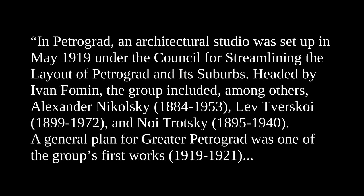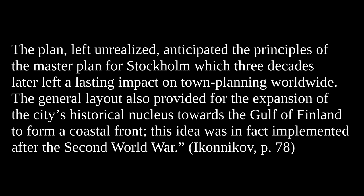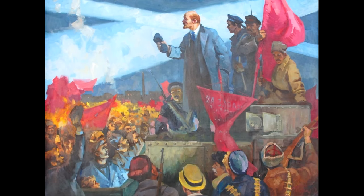In Petrograd, an architectural studio was set up in May 1919 under the council for streamlining the layout of Petrograd and its suburbs. Headed by Ivan Fomin, the group included Alexander Nikolsky, Lev Tverskoy and Noe Trotsky. A general plan for Greater Petrograd was one of the group's first works in 1919–1921. The plan, left unrealized, anticipated the principles of the master plan for Stockholm, which three decades later left a lasting impact on town planning worldwide. The general layout also provided for the expansion of the city's historical nucleus towards the Gulf of Finland to form a coastal front — an idea in fact implemented after the Second World War. Although these plans were often quite modest or were not realized, they marked the beginning of town planning.